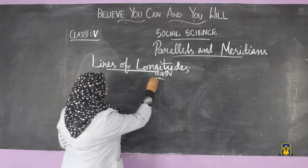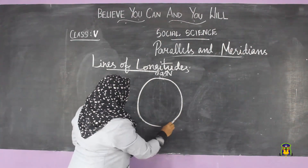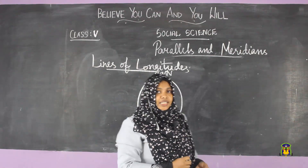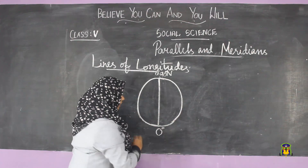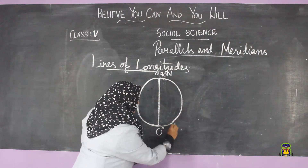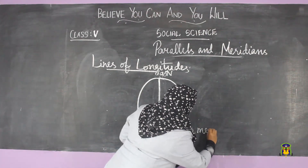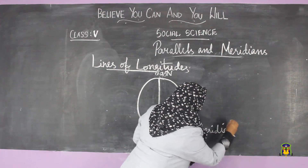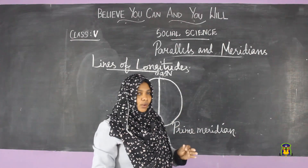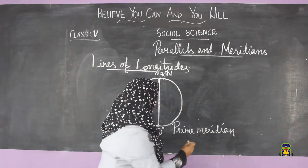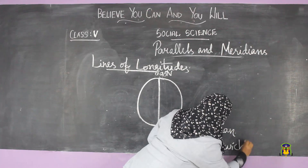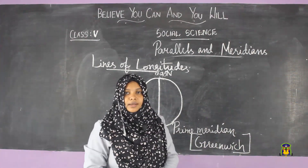The important longitudinal line is the prime meridian, and it is marked as zero degrees — just like the equator is marked as zero degrees. The prime meridian passes through Greenwich. You will study about Greenwich in detail in sixth standard. The prime meridian is also called the Greenwich meridian because it passes through Greenwich.